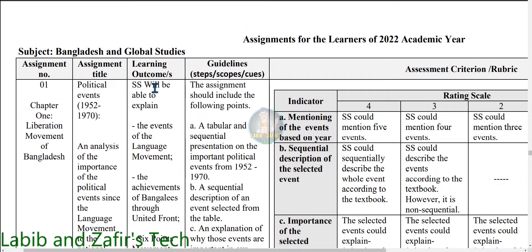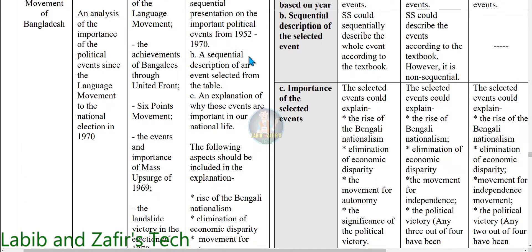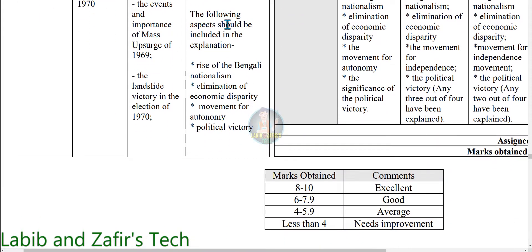These are the learning outcomes. Now we will go through the guidelines. The assessment should include the following points. Part A: A tabular and sequential presentation on the important political events from 1950 to 1970. Part B: A sequential description of an event selected from the table. Part C: An explanation of why those events are important in our national life, including the rise of Bengali nationalism, elimination of economic disparity, movement for autonomy, and political victory.